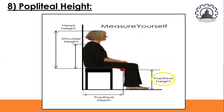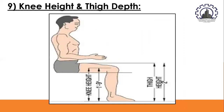Popliteal height is the height of the popliteal fossa — the back of the knee — above the ground. The 5th percentile popliteal height may be used to determine the maximum allowable height of non-adjustable seats. The 95th percentile popliteal height may be used to set the highest level of adjustment of height-adjustable seats. Knee height and thigh depth, taken together, specify the height above the floor of the upper thigh of a seated person, used to determine thigh clearance required under a table or console.